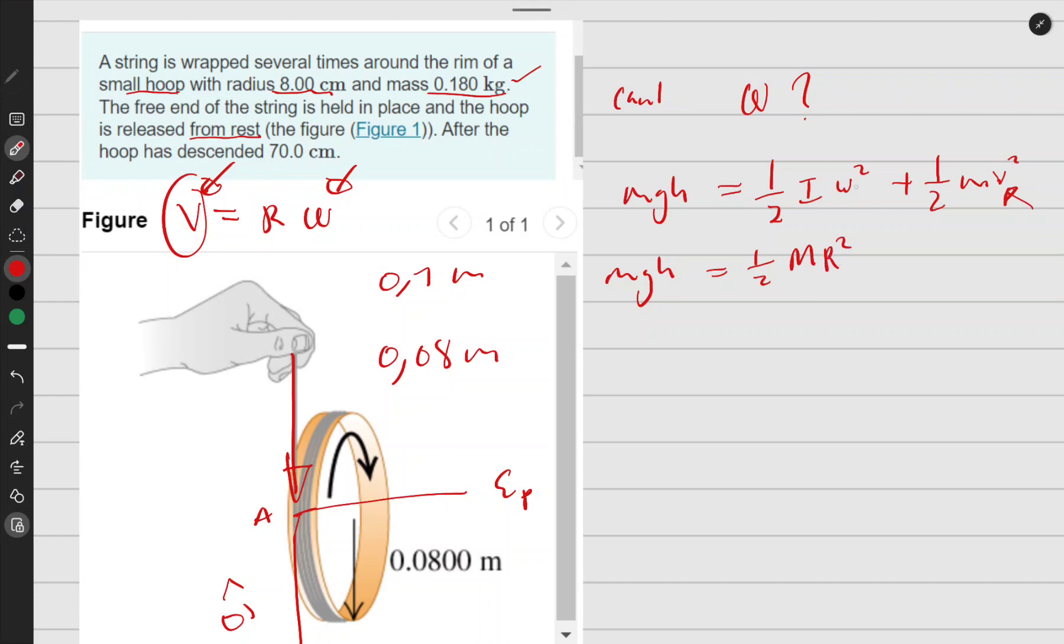So I have (1/2)MR² omega squared. This omega squared can be written as V over R, so it becomes (1/2)MV² divided by R squared times R squared, plus (1/2)MV².